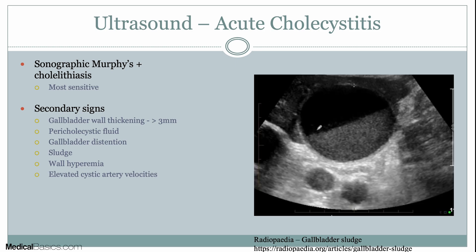The next thing I mentioned is sludge. Essentially what you're looking for is something layering — fluid levels — something that could also potentially be mobile. Tumefactive sludge or more compact sludge is not going to be very mobile, but if the patient were turned into lateral decubitus, the sludge would move and layer in a different conformation, confirming it was sludge. This looks like homogeneous, non-shadowing debris.